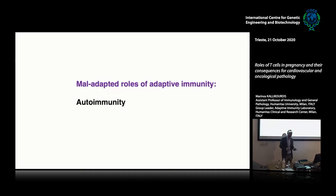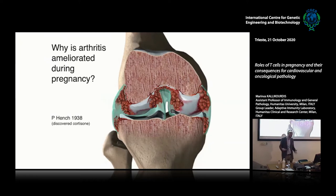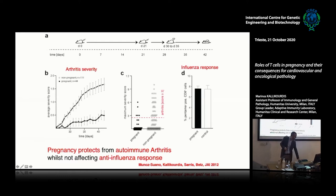Looking at autoimmunity: there is a very old observation, first made by Hench — who discovered cortisone — that three out of four women with rheumatoid arthritis are temporarily cured during pregnancy, and the disease comes back afterwards. Indeed, many incidence peaks tend to be after birth and at menopause. We wondered whether this could be linked to the expansion of regulatory T-cells. In mice, if you induce arthritis and then make them pregnant, arthritis is dampened. The bottom line: pregnant mice show reduced arthritis severity compared to non-pregnant mice.